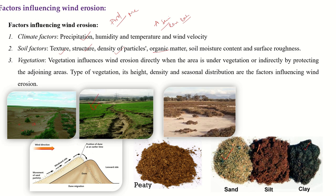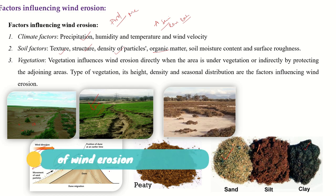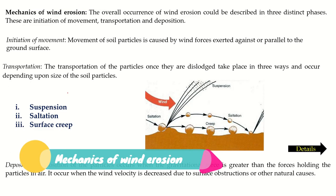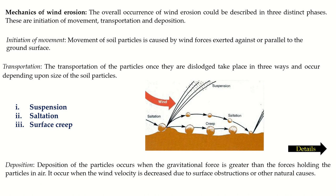Vegetation also directly influences soil erosion. With vegetation cover, there is less chance of erosion compared to soil directly exposed to wind. The slope and wind direction also play a major role — if the wind direction is aligned with the slope, higher erosion occurs compared to the leeward side.